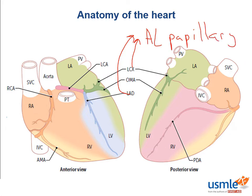One incredibly high yield related point is that the posterior medial papillary muscle is only supplied by the posterior descending artery. This makes it prone to infarction and rupture because it does not have a backup blood supply like the anterolateral papillary muscle does.